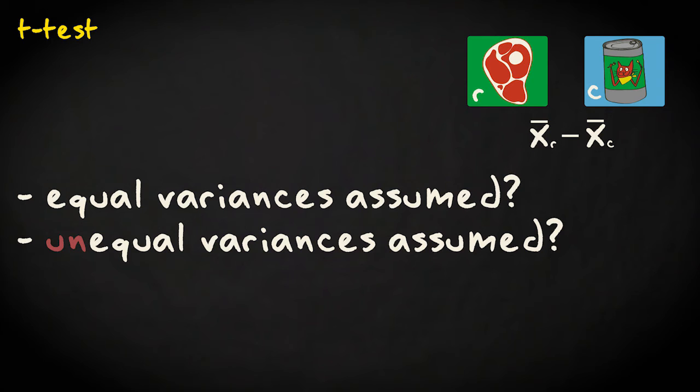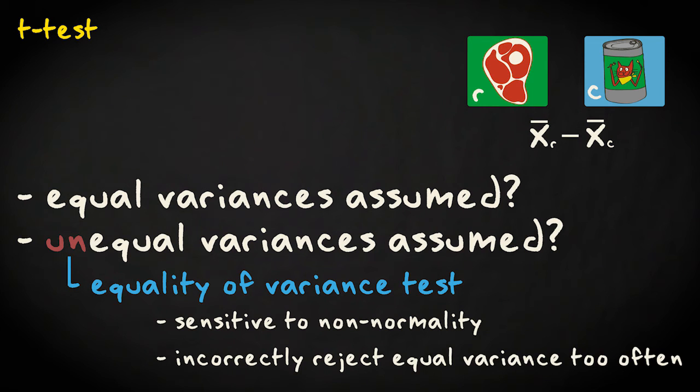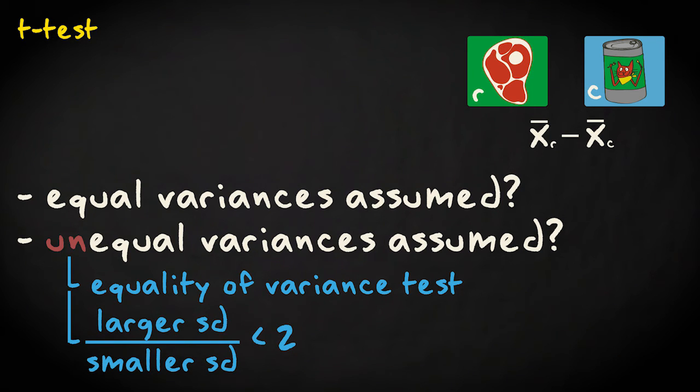Some people decide to make the extra assumption based on a test that determines whether the variances are equal. But these tests are not very robust against violation of normality and will be significant too often. If you want to make the extra assumption, then as a rule of thumb, only do so if the standard deviations differ by less than a factor of two.